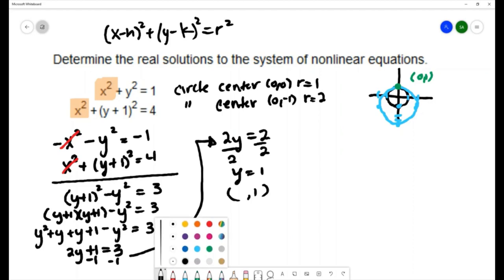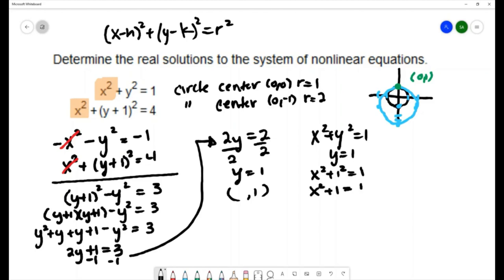So I'll take my equation x squared plus y squared equals one. Let's substitute y equals one. That's x squared plus one squared equals one. That's x squared plus one equals one. Subtracting one to get x squared equals zero. And if I square root both sides, I will get x equals zero. So my ordered pair solution is zero one.